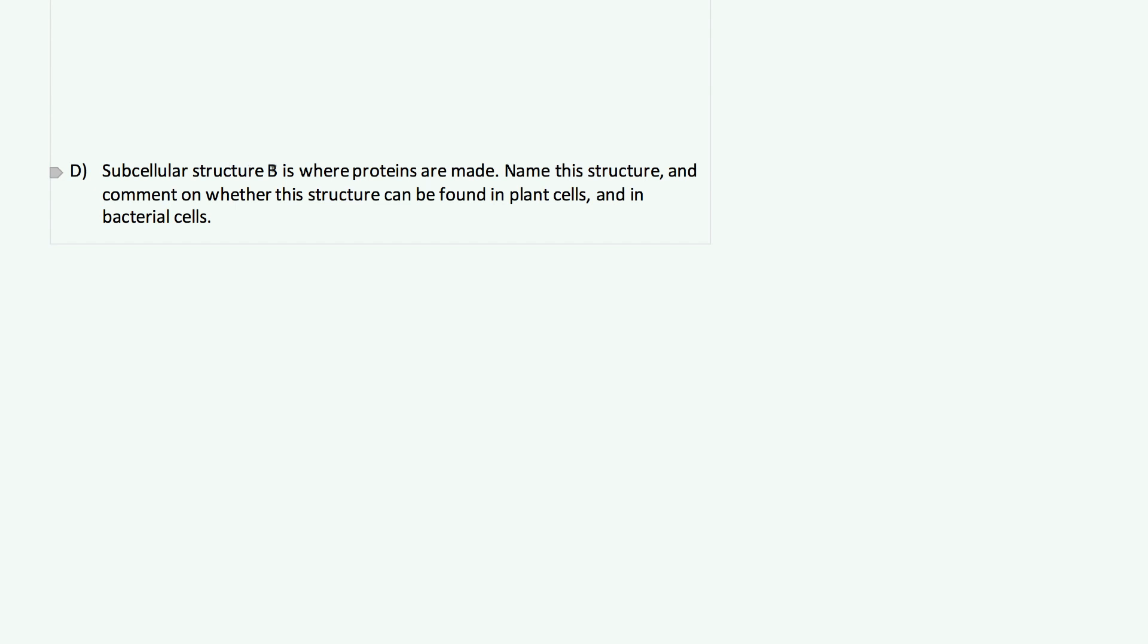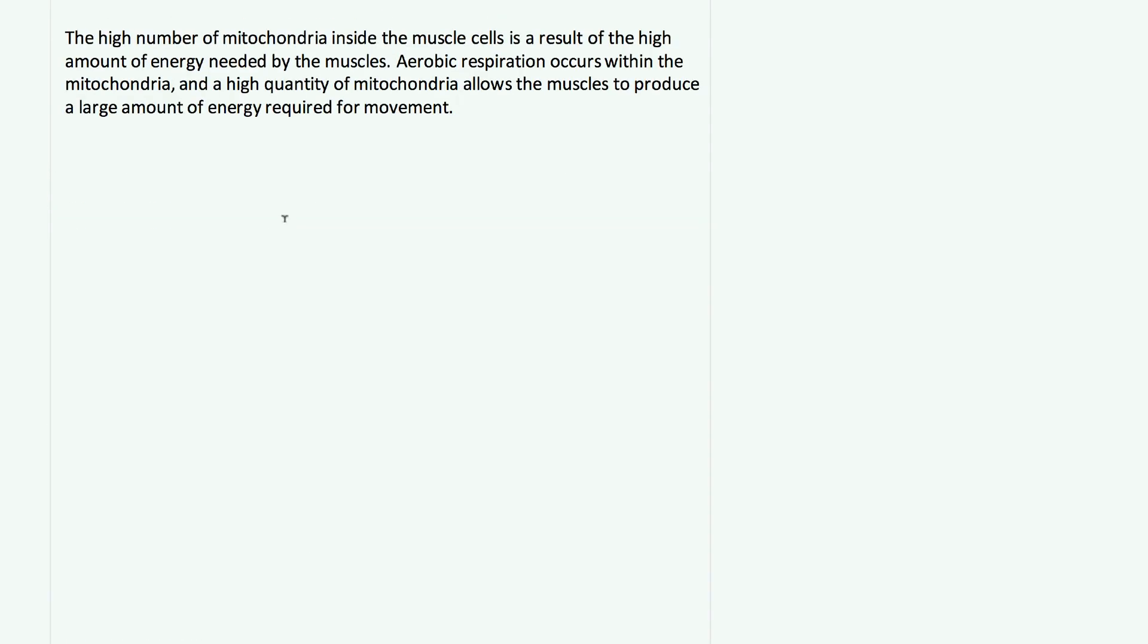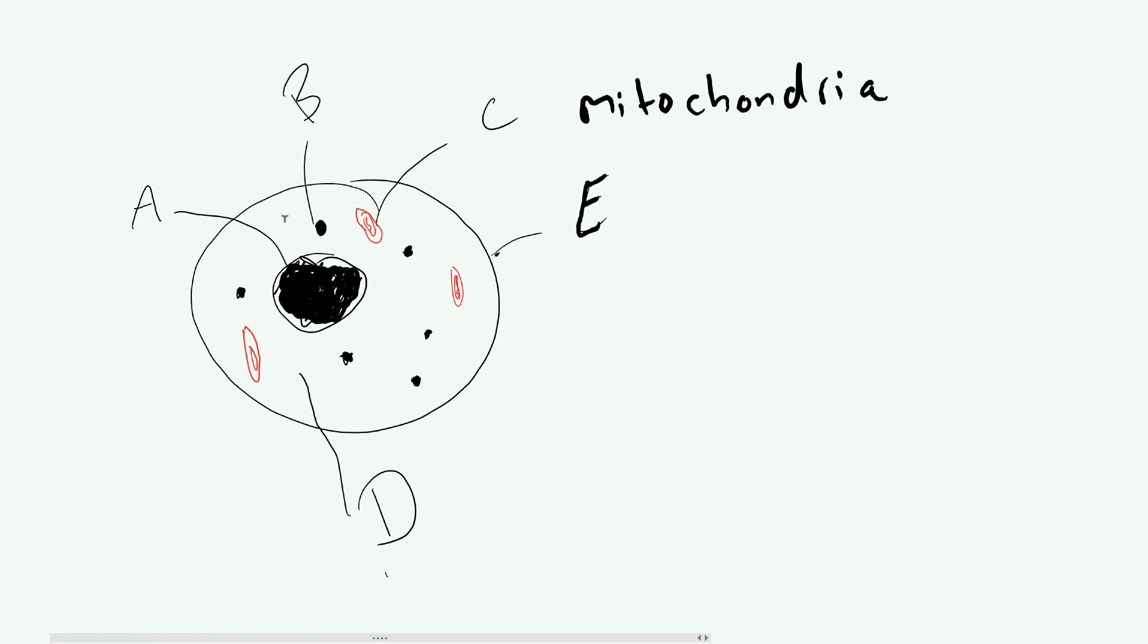Let's have a look lastly at section D. It says subcellular structure B is where proteins are made. It says name this structure and comment on whether this structure can be found in plant cells and in bacterial cells. This last part is kind of a crossover between the different parts of cells. It says structure B, which are these dots, that's where proteins are made, and you should know that where proteins are made are the ribosomes.